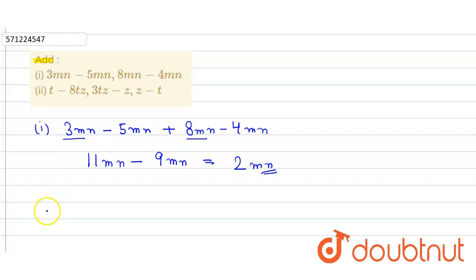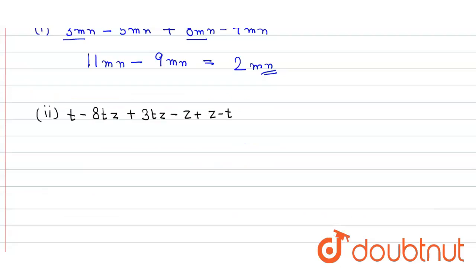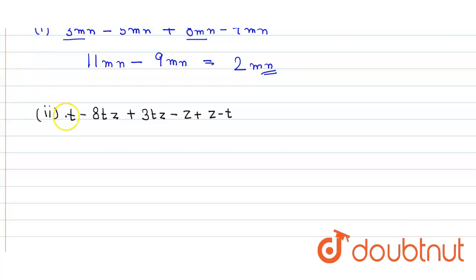Similarly, in the second part we have to add t - 8tz + 3tz + z - t. So here we can simply write all the positive expressions together and negative expressions together.